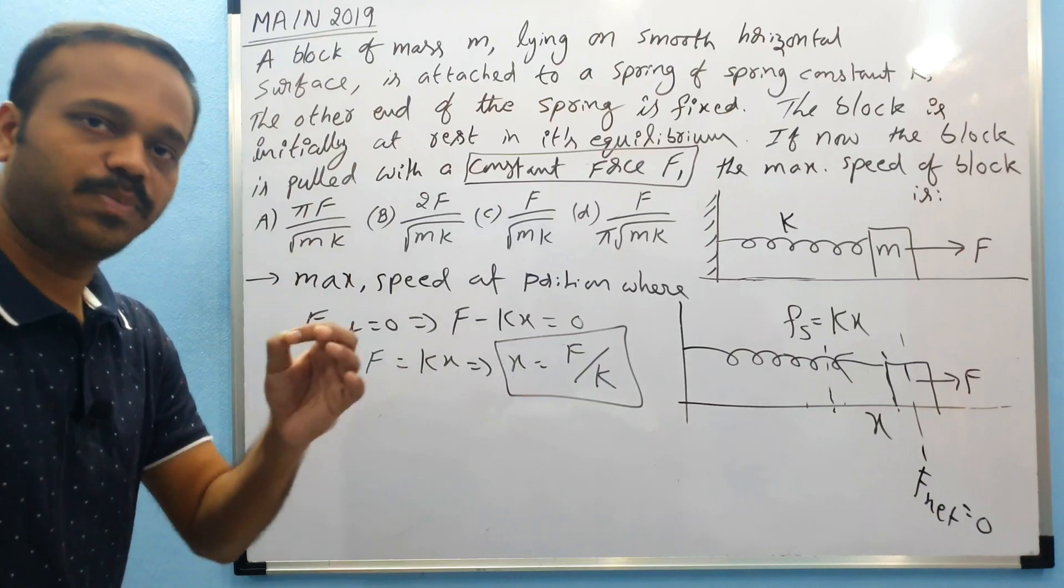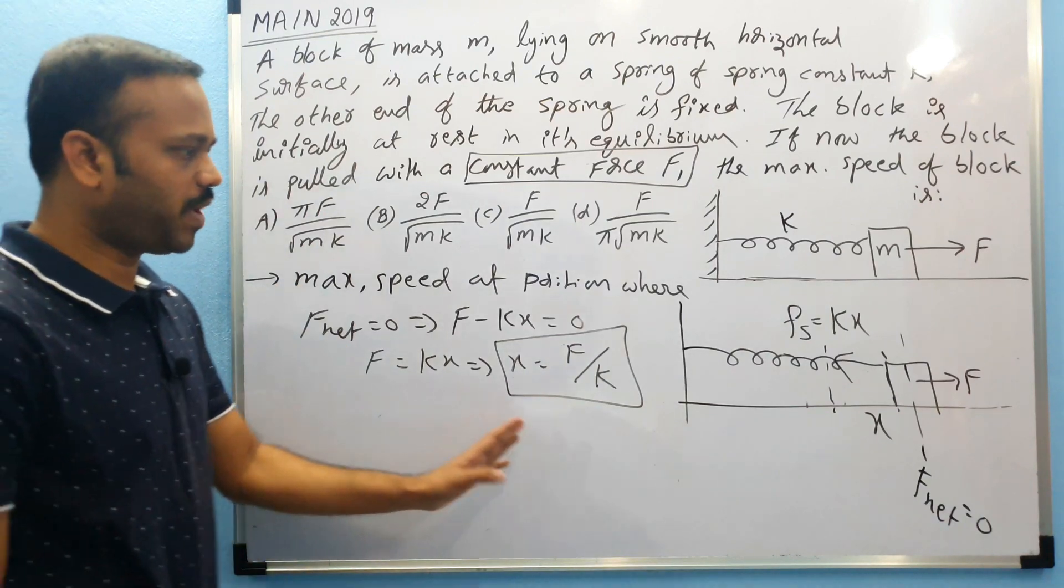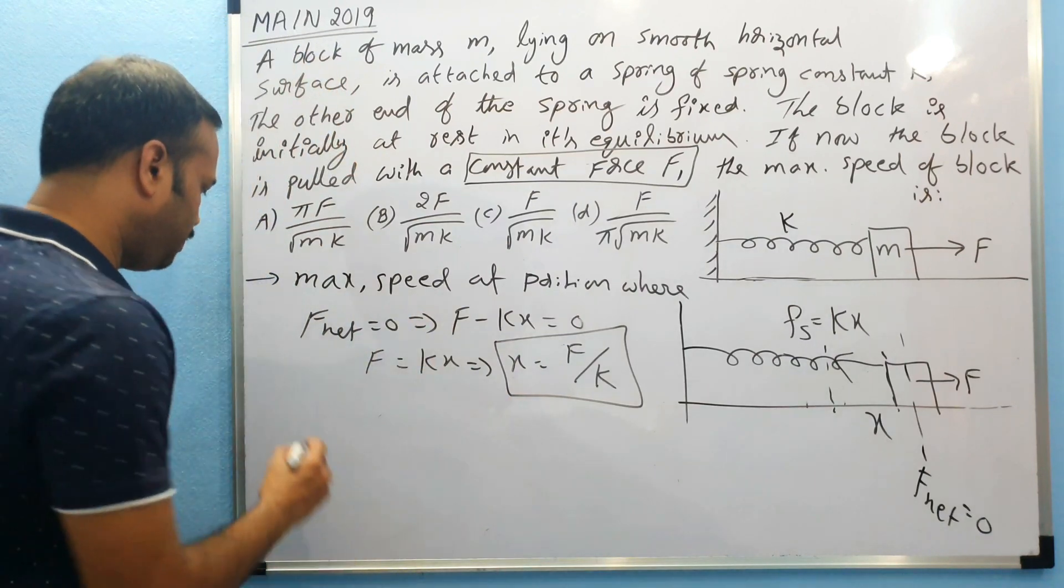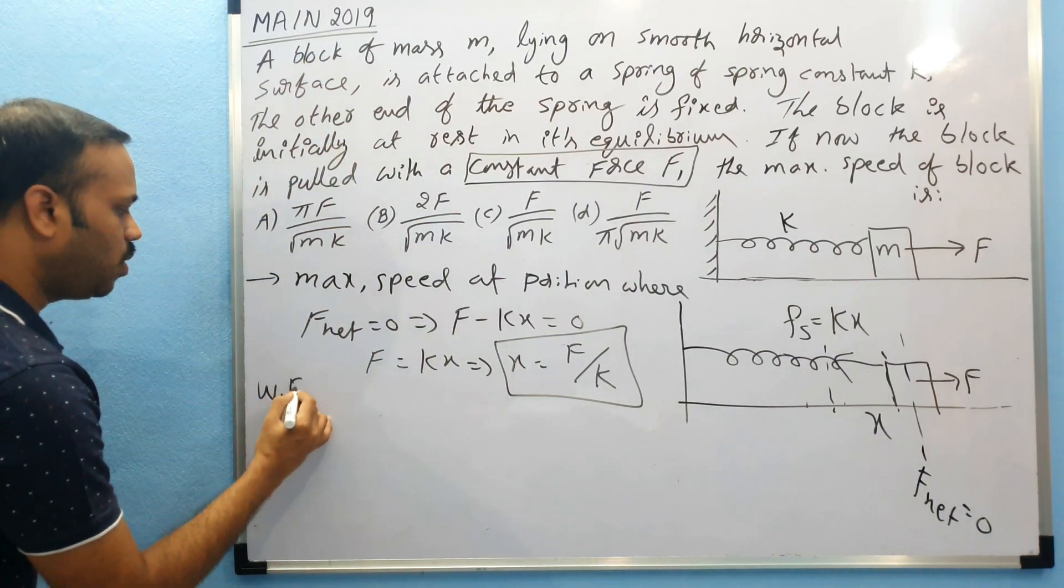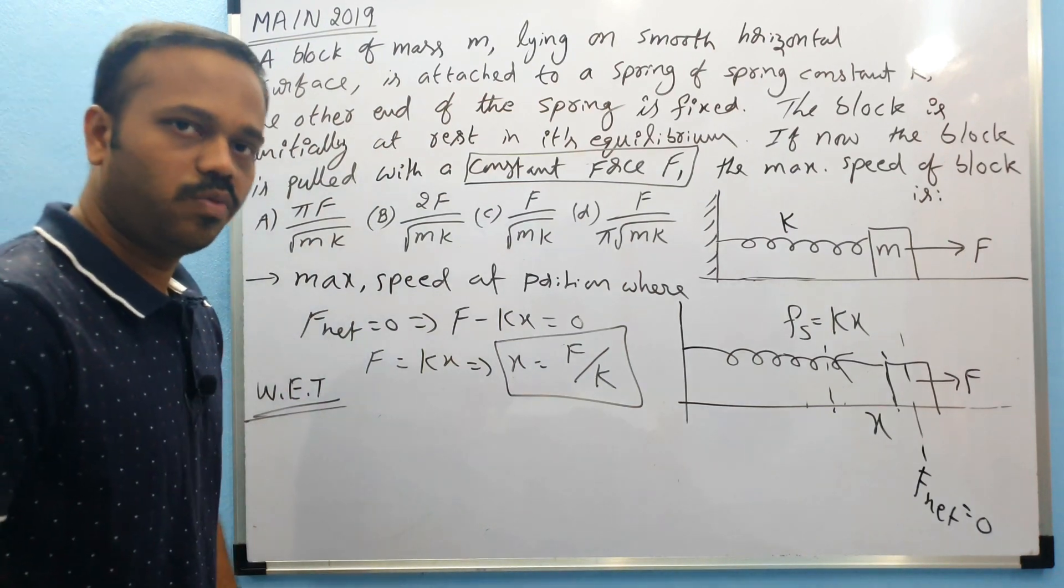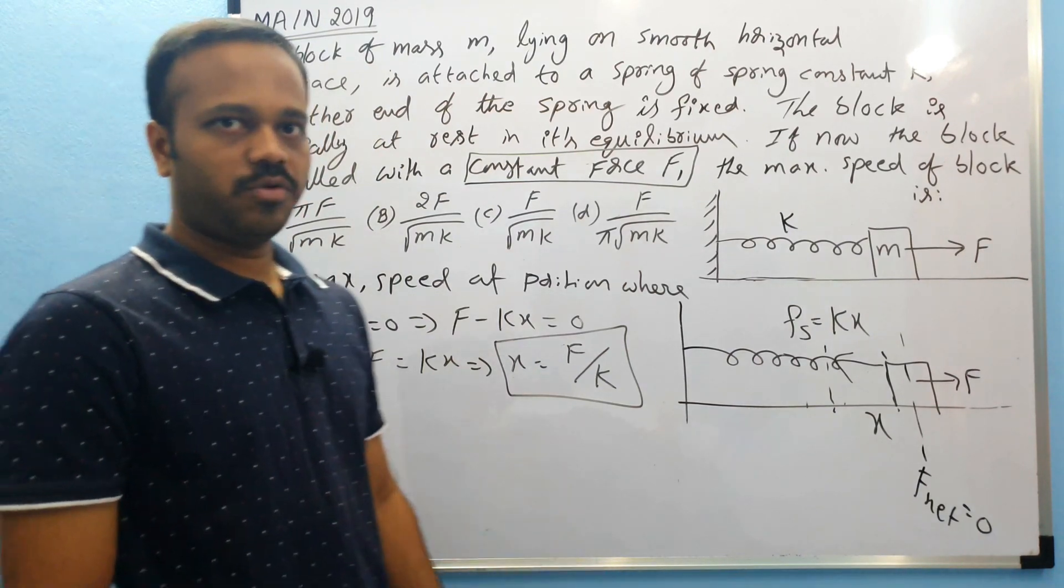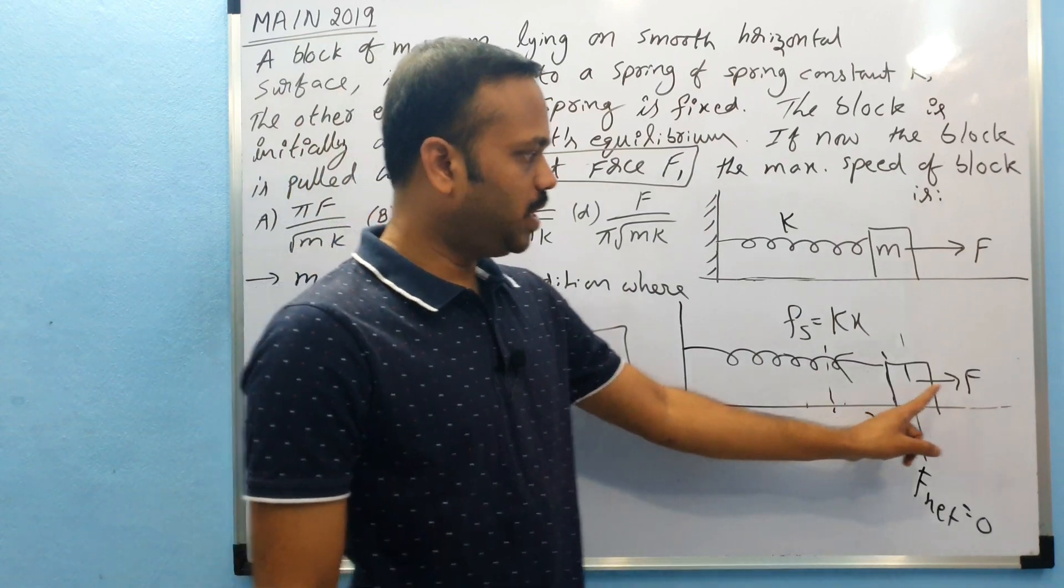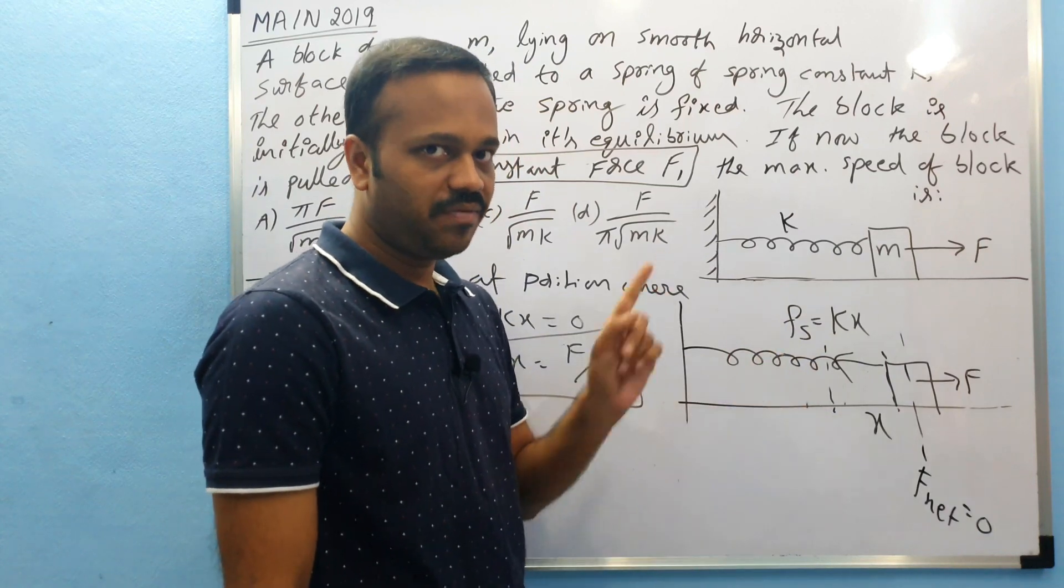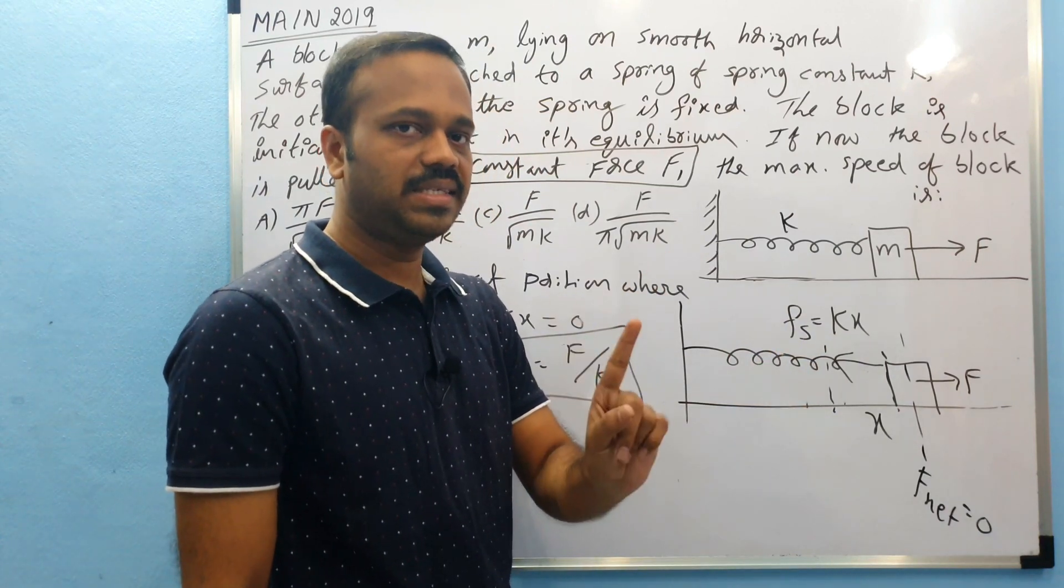Now we need to find what is that maximum speed. For that I will apply work-energy theorem. What is work-energy theorem telling? The change in kinetic energy is equal to work. Here how many forces are there? Two forces. So we need to consider what is the work done by F, what is the work done by spring force.